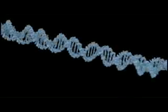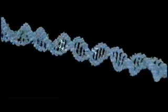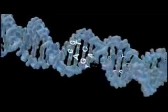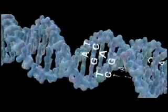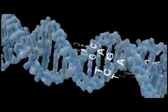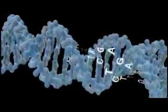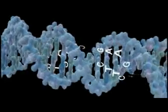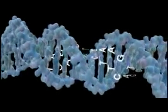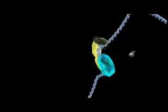In 1957, Francis Crick first proposed that chemicals called bases along the spine of the DNA molecule function as alphabetic characters in a written language or digital characters in a machine code. This animation shows how this digital information directs protein synthesis.